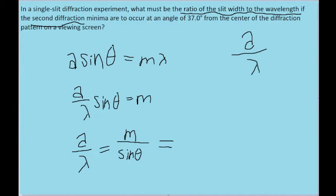So that would be 2 over the sine of theta. And it's the angle that the problem gives us, which is 37 degrees. So the sine of 37 degrees.